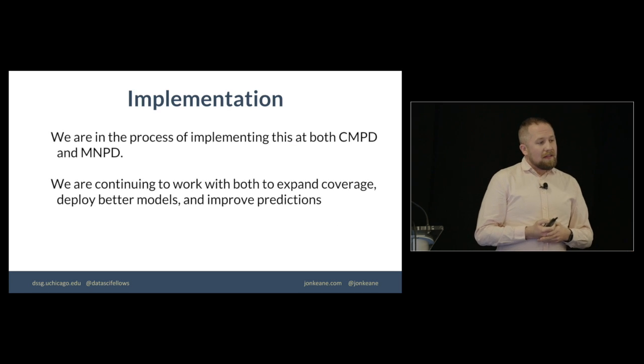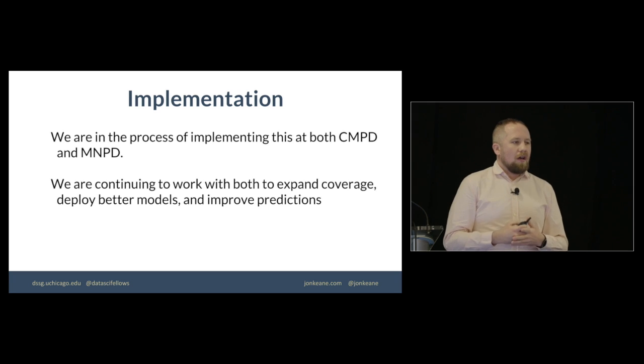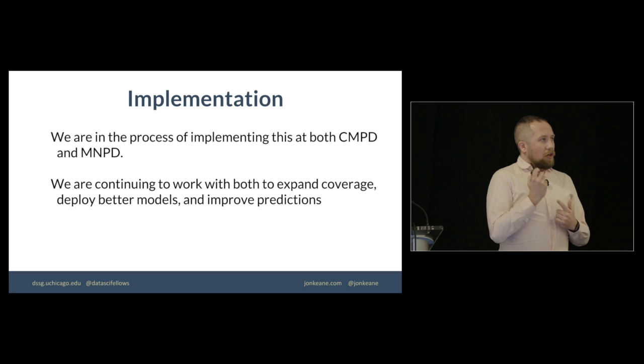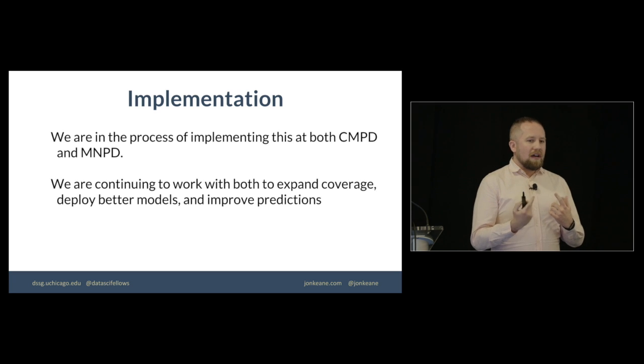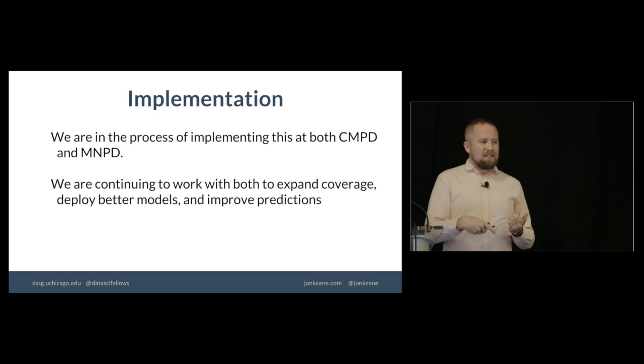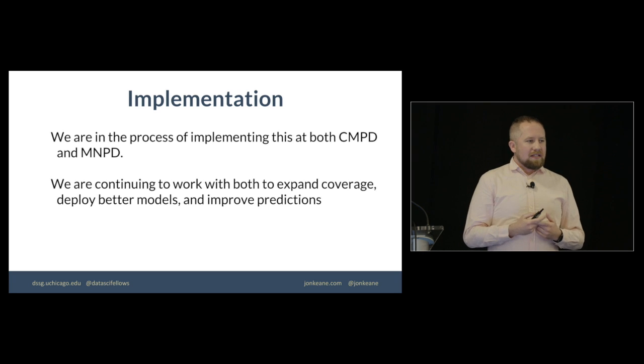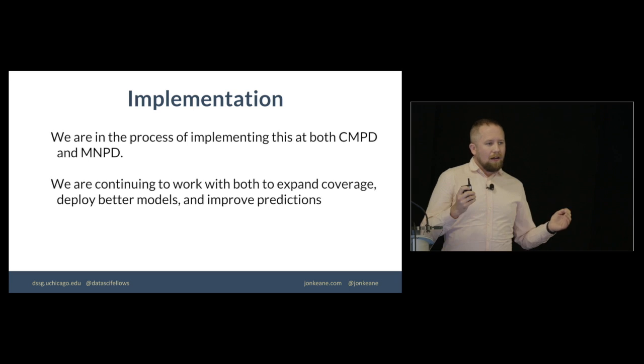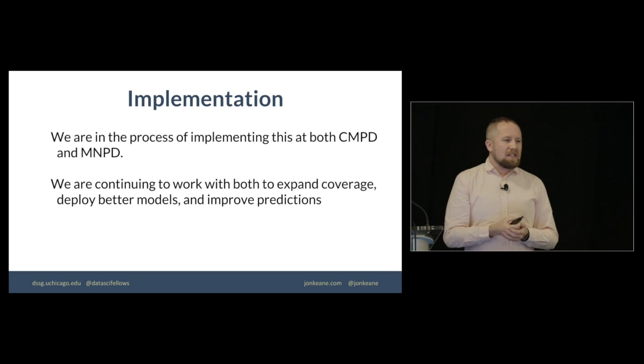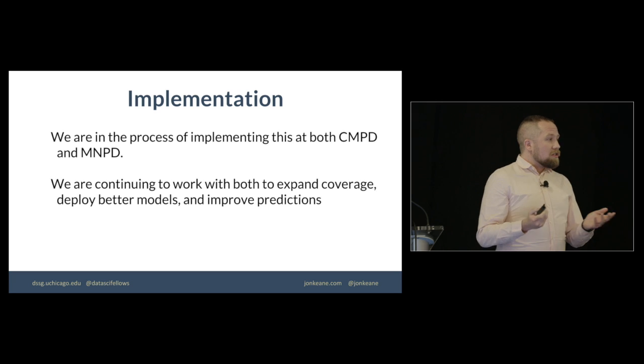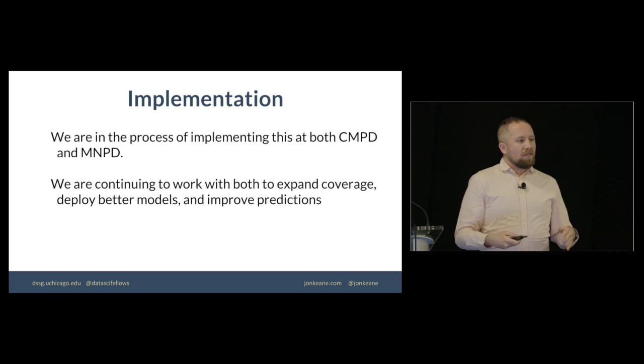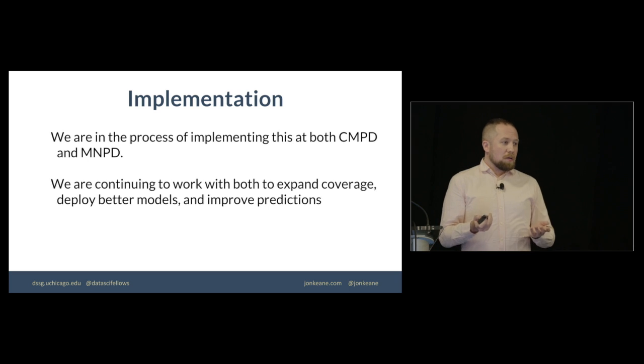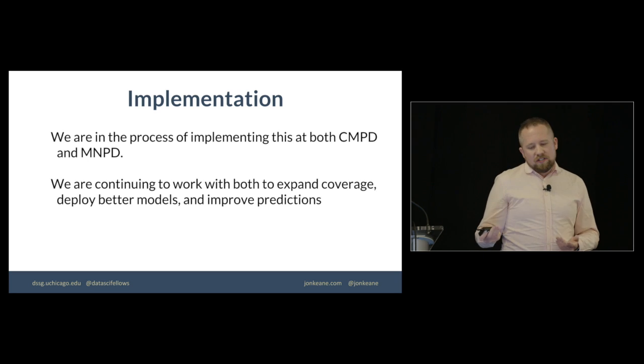So we are currently working to implement this both in Nashville and in Charlotte. We're working on adding new features. In Charlotte, we actually have a system where supervisors can provide feedback so we can kind of get some humans in the loop. And so we say, this particular officer keeps on getting flagged. The supervisor says, no, he's totally fine. We can learn from that over time and see why is our model picking this one if they are, in fact, actually fine. And also, ideally, look at how the supervisors are interacting with these scores. So some supervisors might take them very seriously, whereas others might not at all.